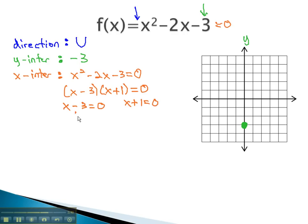Setting each factor equal to 0, we can quickly find the 2 x-intercepts by adding 3. The first x-intercept is at 3 on the x-axis, and subtracting 1 to get our second x-intercept of negative 1 on the x-axis.